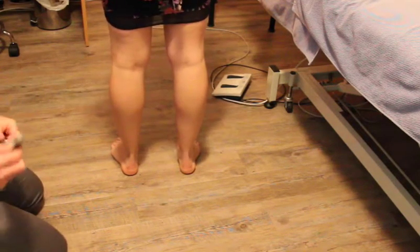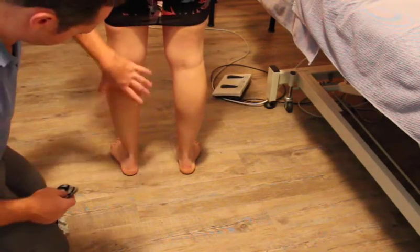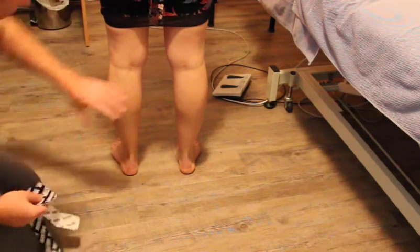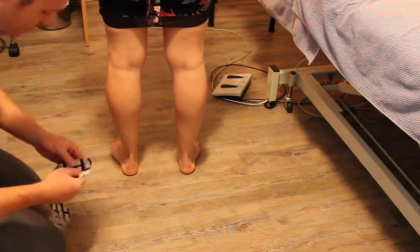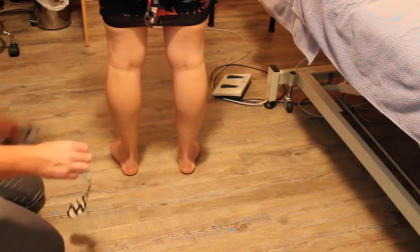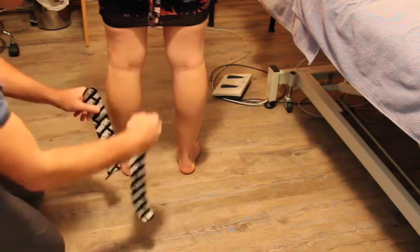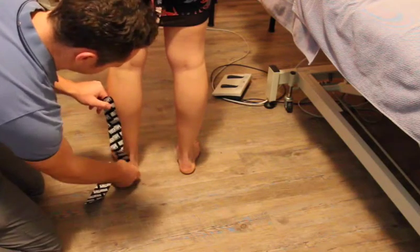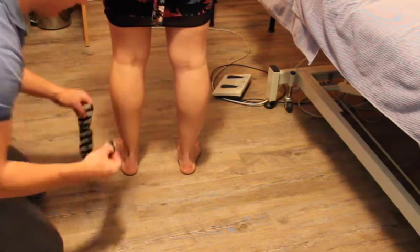So the next taping we're going to do is for the gastrocnemius and Achilles problems. The way I tend to do it in clinic is to get two big pieces of tape and run them up on angles from underneath the ankle up to here.